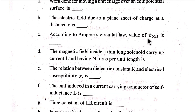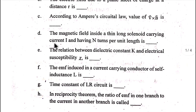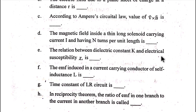According to Ampere's circular law, the value of del operator cross B vector is dash. The magnetic field inside a thin long solenoid carrying current I and having n turns per unit length is dash.